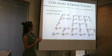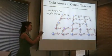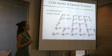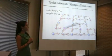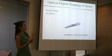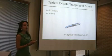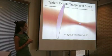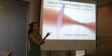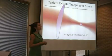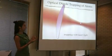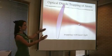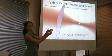Of course, to actually address and manipulate a single one of these atoms we need a way to hold them. And what we do is we use an optical dipole force trap, or an optical tweezer. The principle behind an optical tweezer is illustrated by this cartoon: atoms in a highly focused, red-detuned laser beam are attracted towards the point of largest intensity.